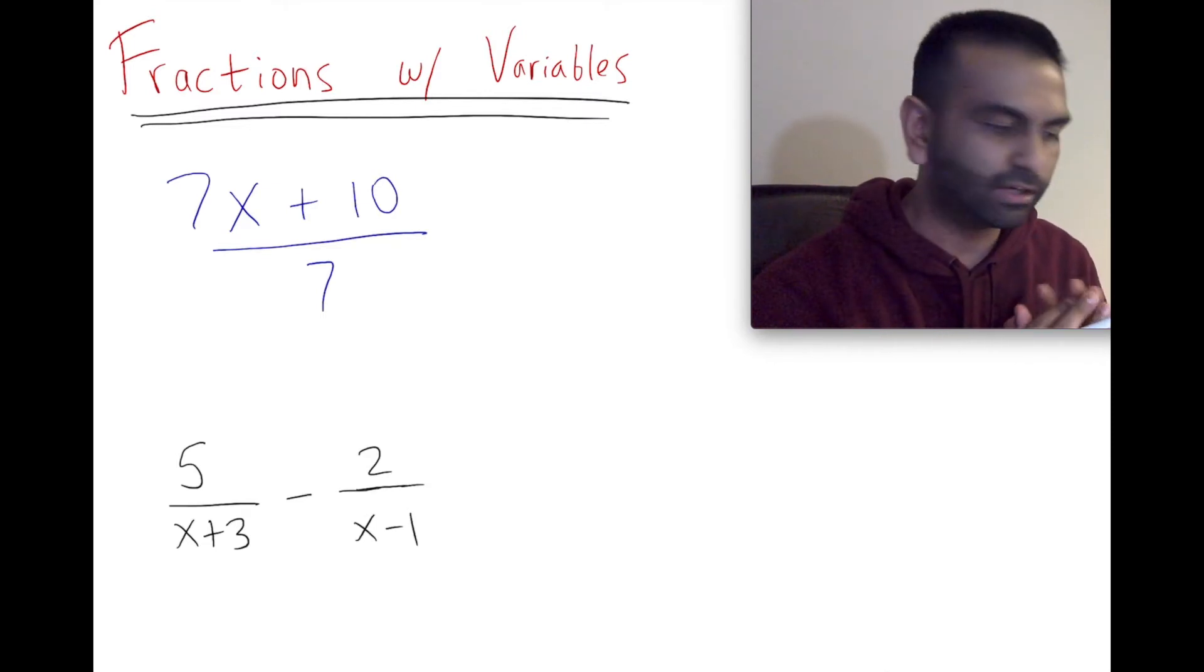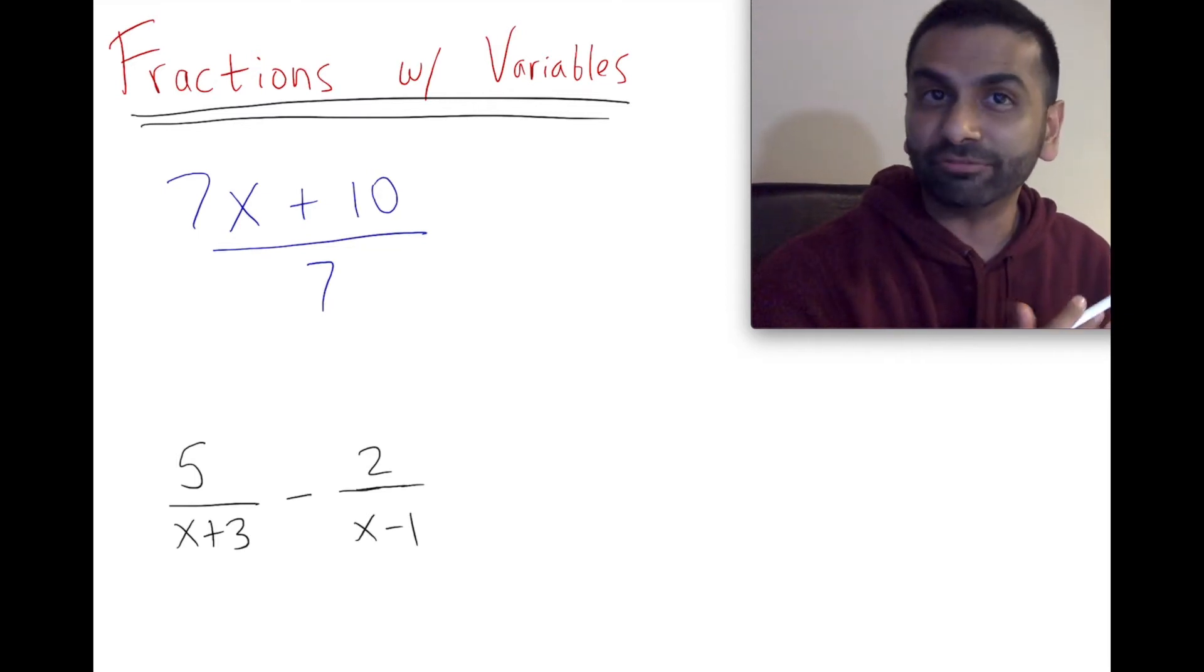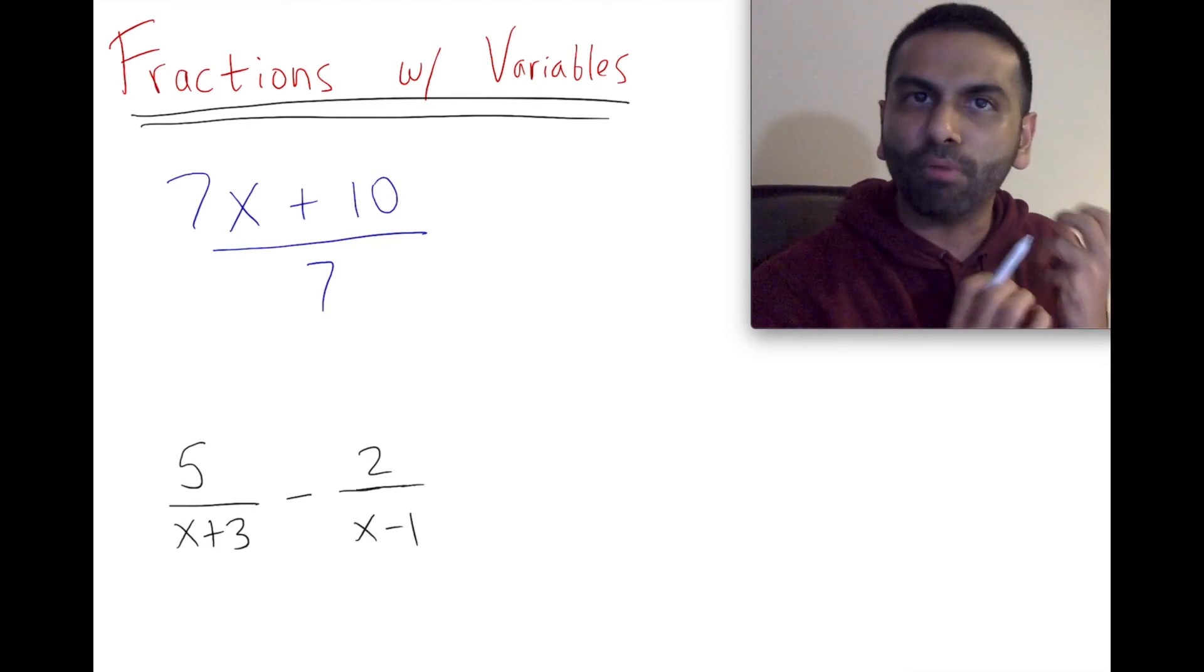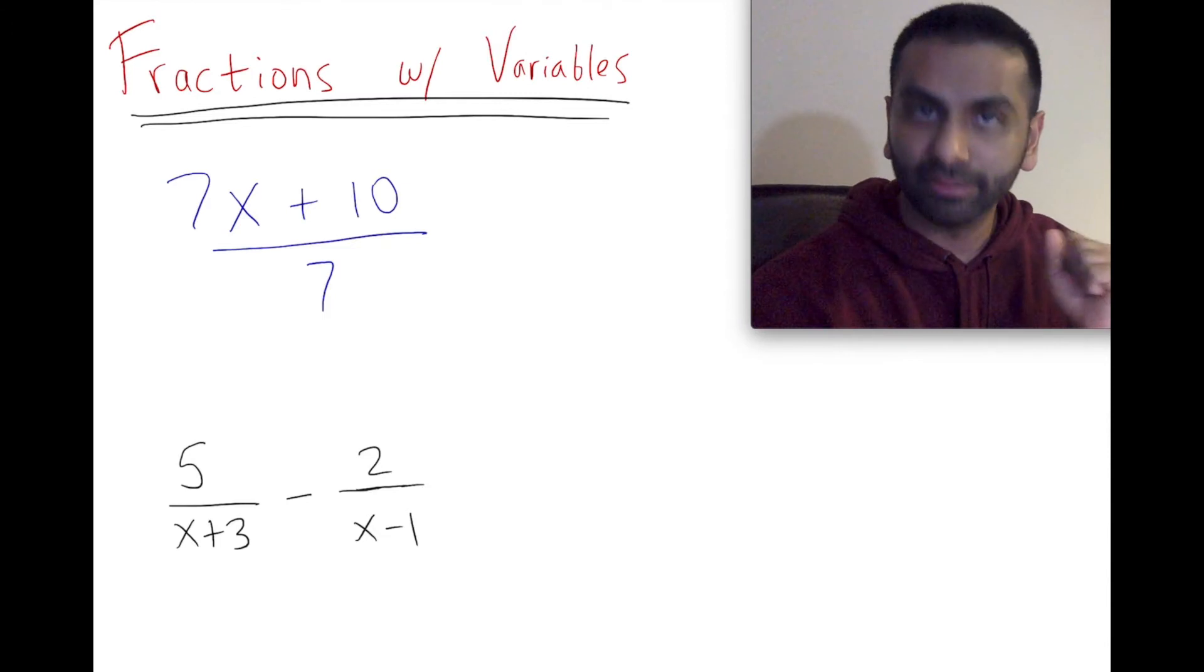Let's take a look at this example. If the question is to simplify 7x plus 10 over 7, how would we simplify it? Right off the bat, one common thing to do in fractions is canceling things from the top and the bottom. However, you can only cancel something from the top and bottom if the thing you're canceling is multiplied to the entire top and multiplied to the entire denominator.